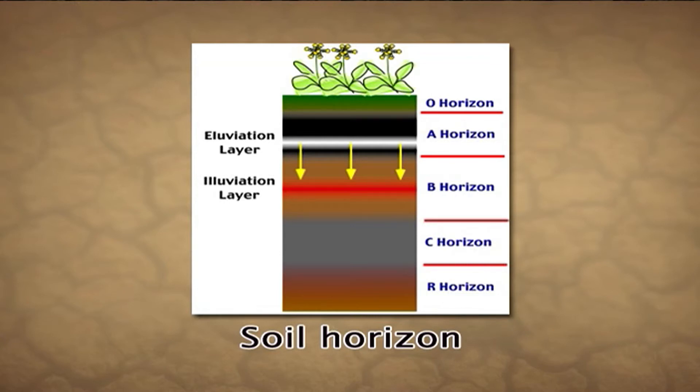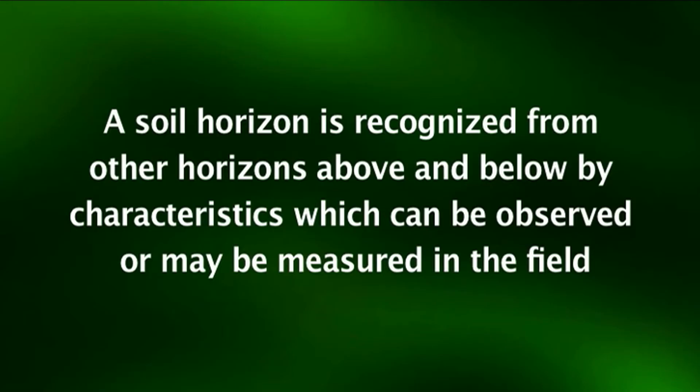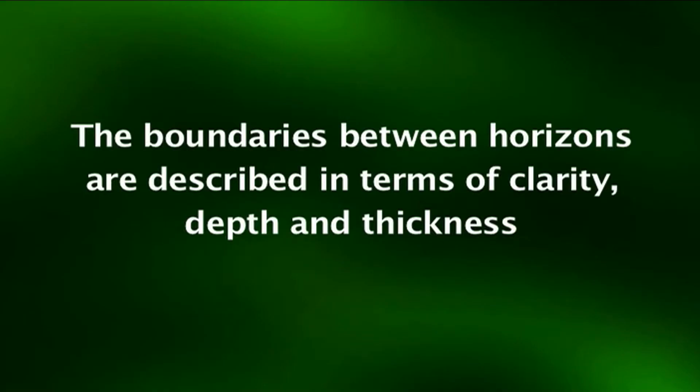These horizons result from the process of chemical weathering, eluviation, illuviation, and organic matter decomposition. A soil horizon is recognized from other horizons above and below by characteristics which can be observed or measured in the field. The criteria normally used are organic matter content, color, texture, structure, consistence, presence of cutans, cementation, stoniness, pans, carbonates, soluble salts, artifacts, biological features, roots, and pH value. The boundaries between horizons are described in terms of clarity, depth, and thickness.